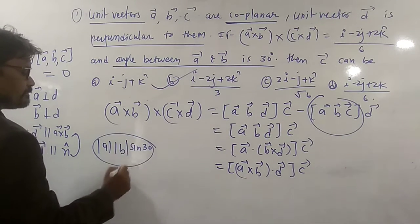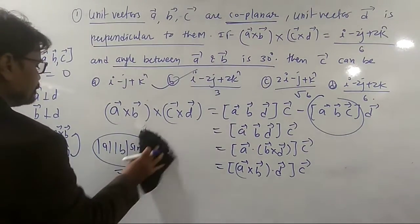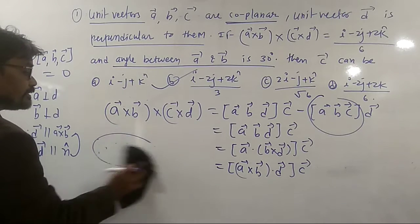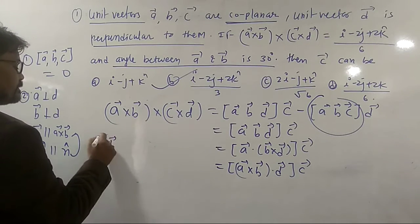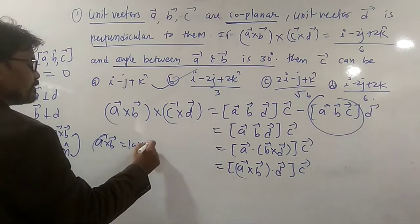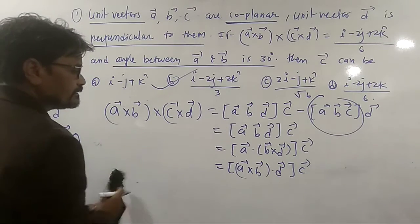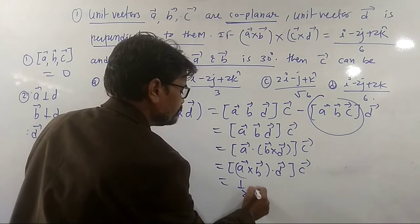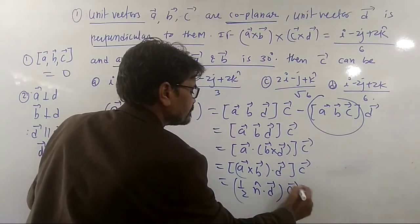A cross B is coming to be 1 by 2. So this is coming to be 1 by 2 and N cap dot D and their vector C.